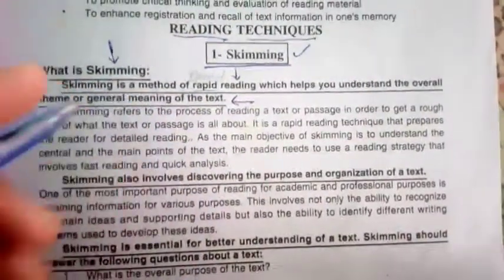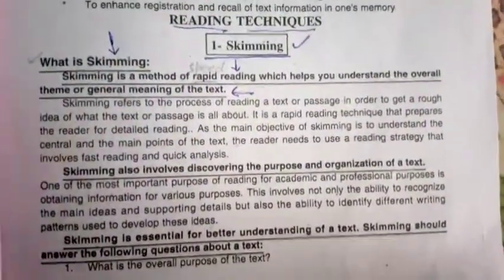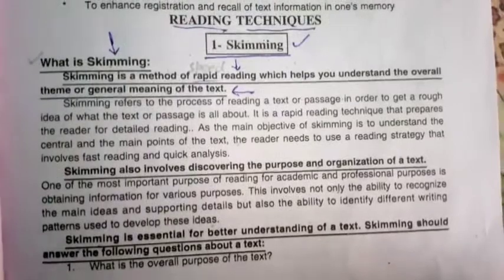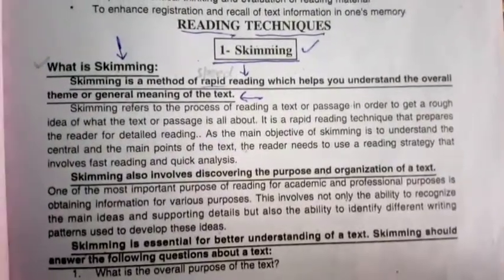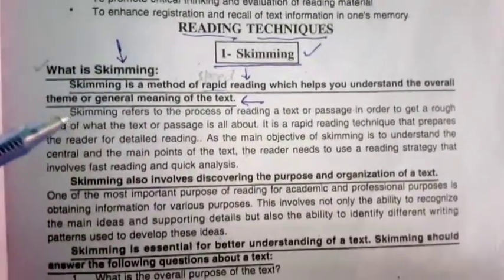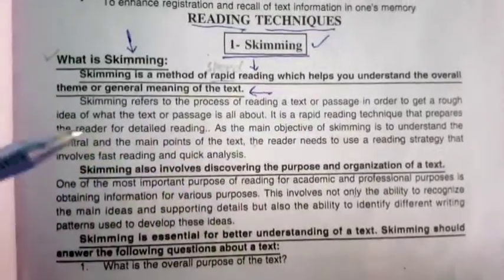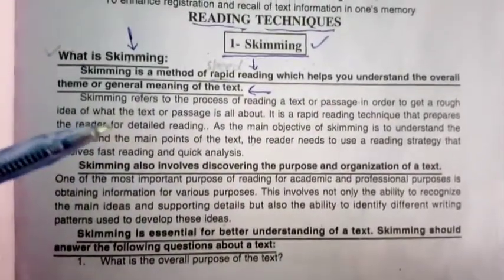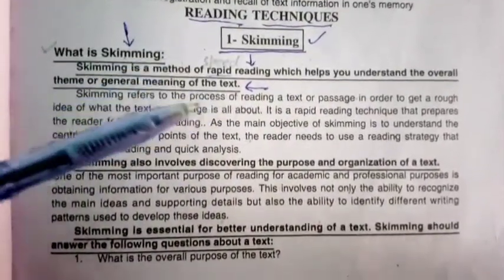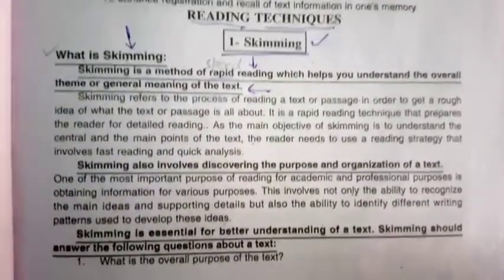When you have a text, Scheming is actually the fastest reading. You have to read fastly. For example, this is our paragraph — you have to read it as fast as you can, just to understand what this paragraph is all about.